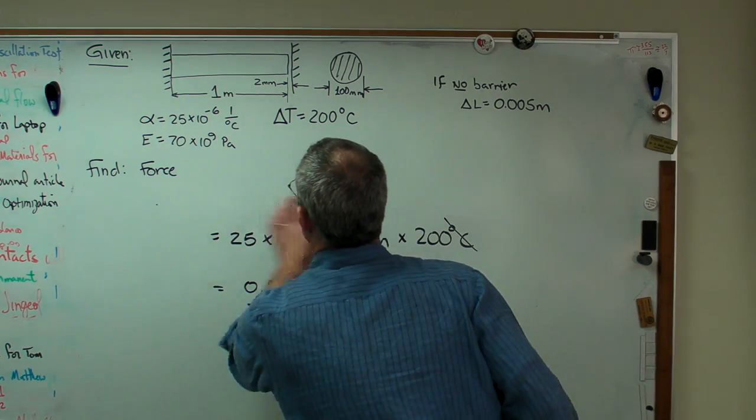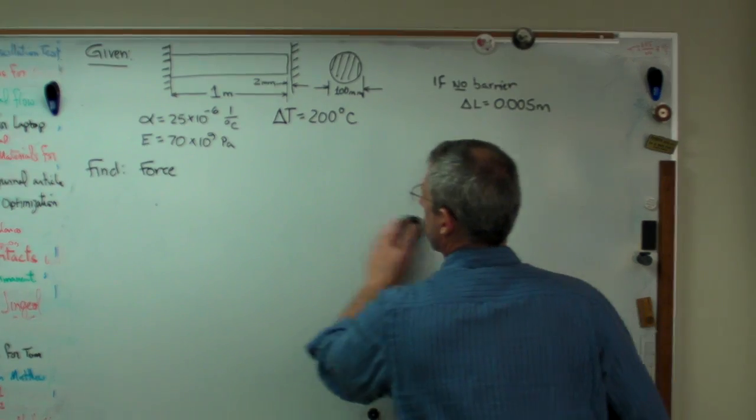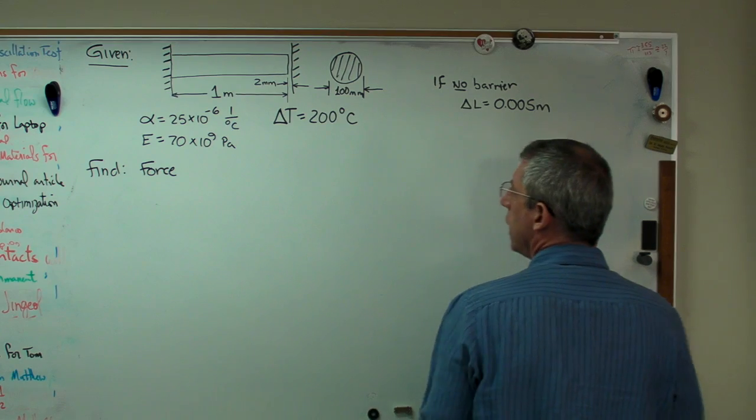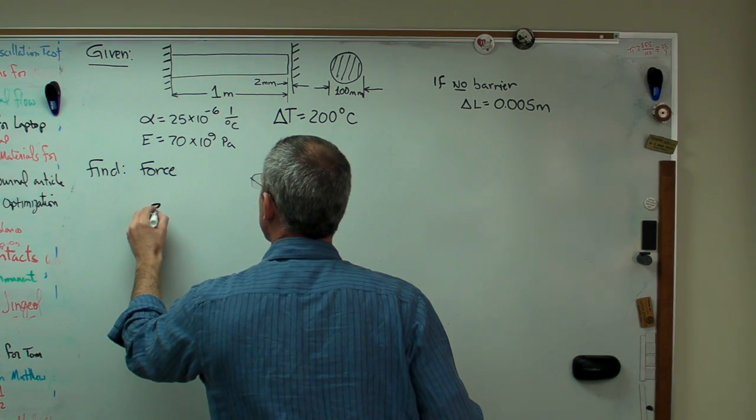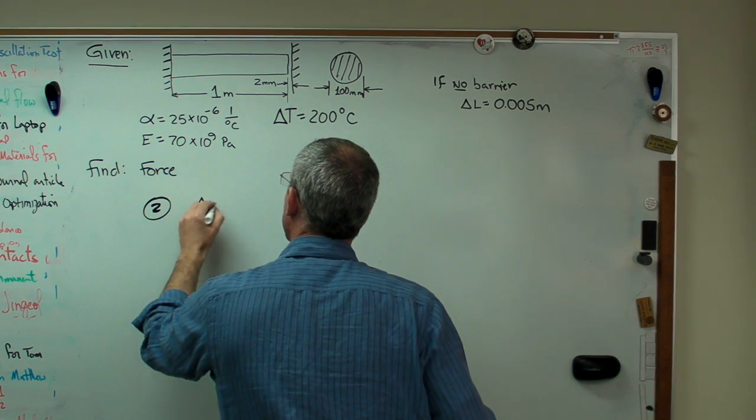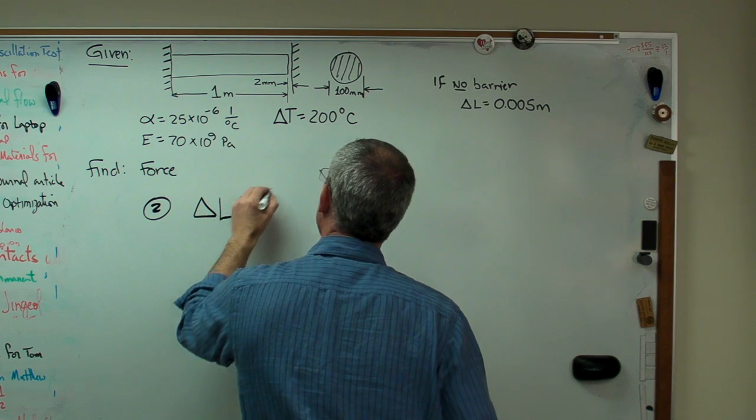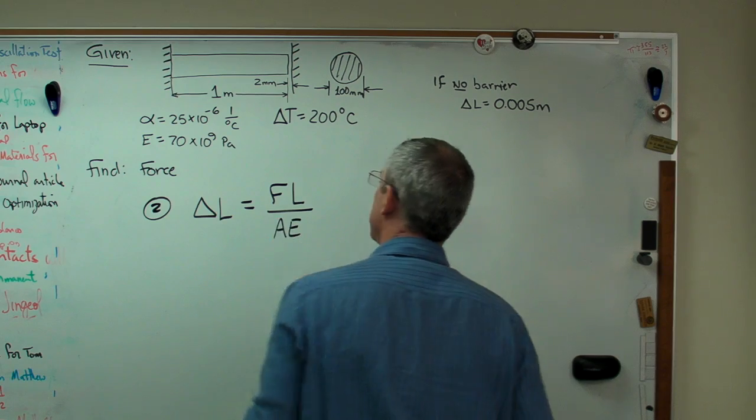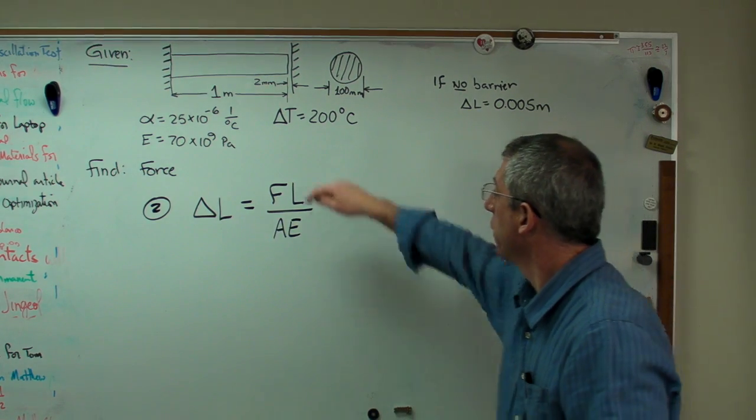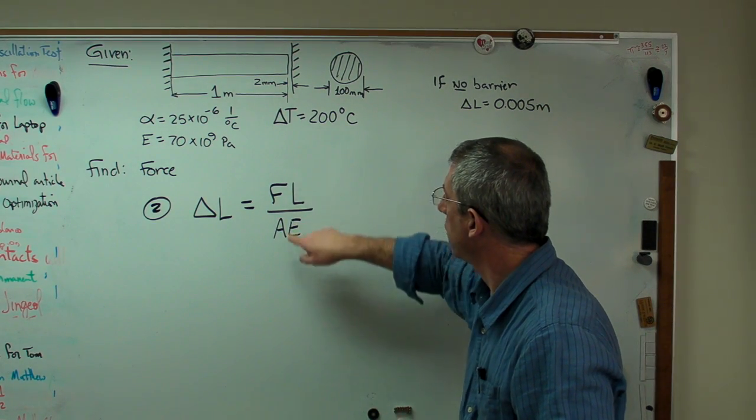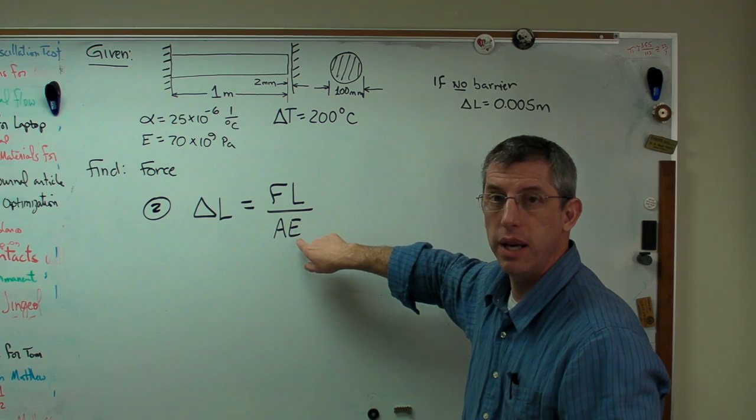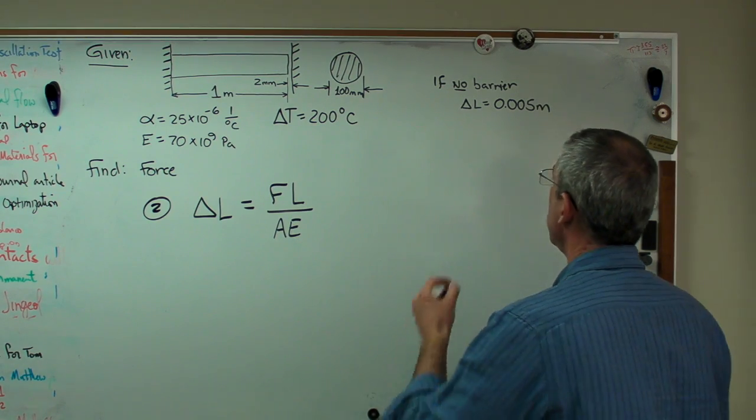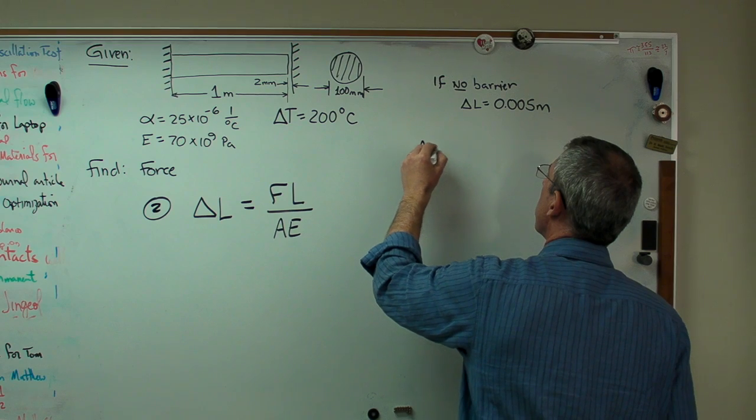Let me erase this. There we go. Now, step 2. I'm going to use another expression for delta L we've seen before. It's FL over AE, where that's force, length, area, and modulus of elasticity. I don't have an area yet, so let me calculate that.